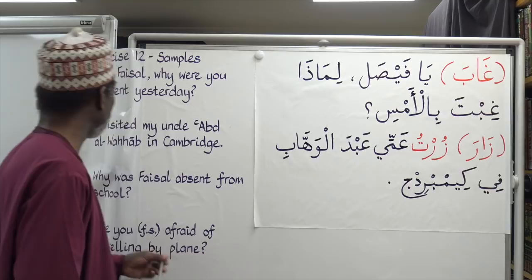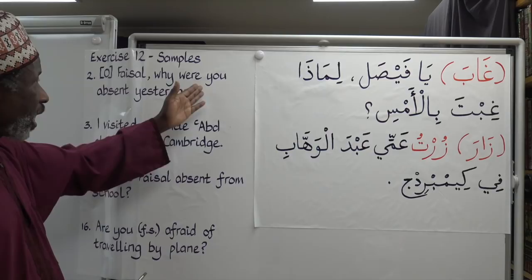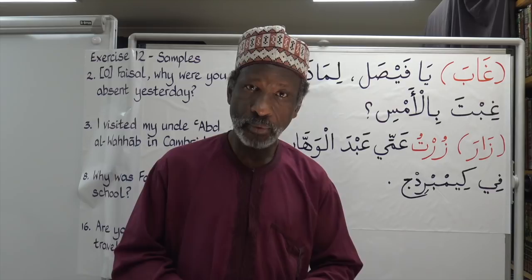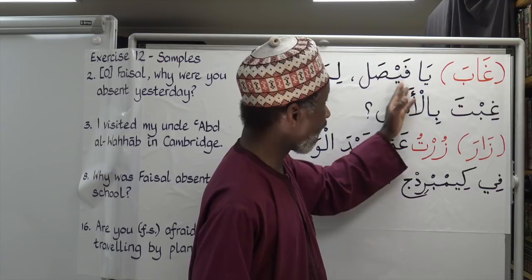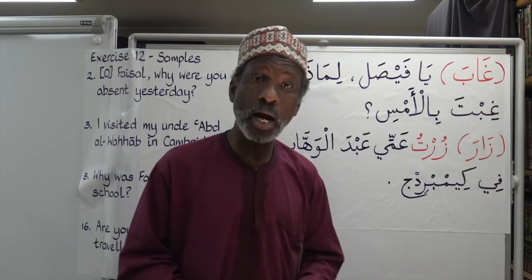Let's start with number 2 of exercise 12: 'Oh Faisal, why were you absent yesterday?' 'Ya Faisal' — that's your vocative. Now we're going to be using this verb: Ghaba, which means 'he was absent.'